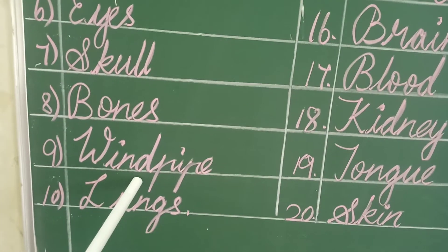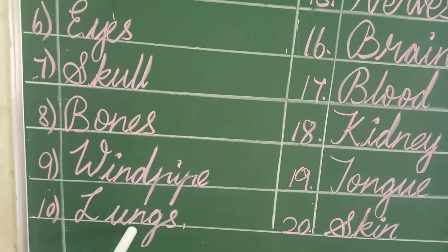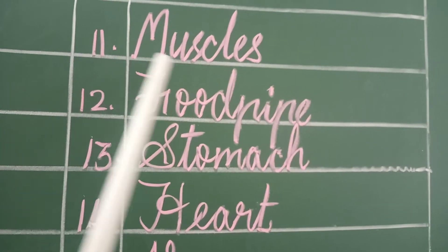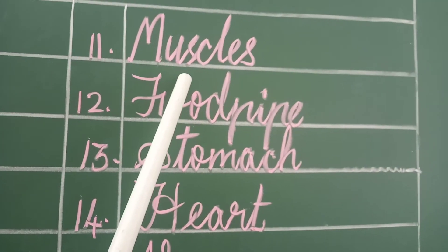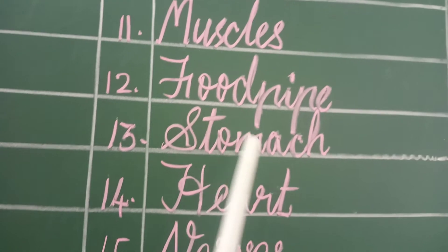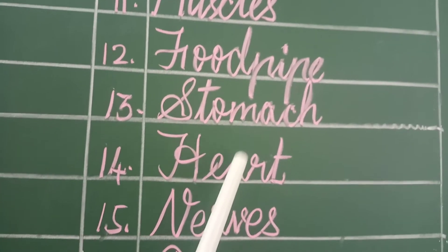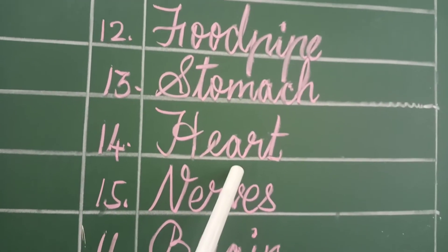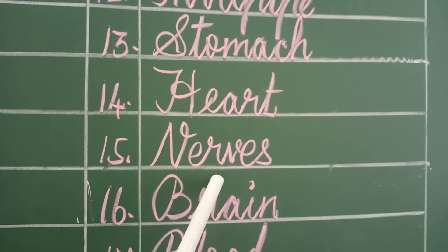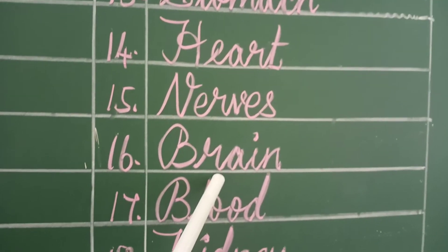Windpipe — swasakulai. Lungs — nurayiral. Muscles — thasayal. Foodpipe — unavukulai. Stomach — vayiru. Heart — irudayam. Nerves — narambukal. Brain — mulai.